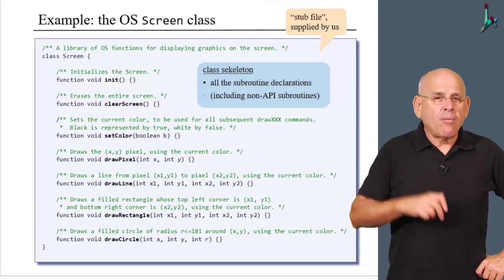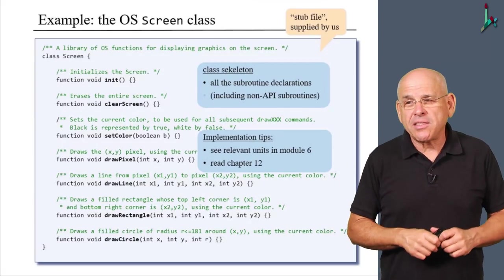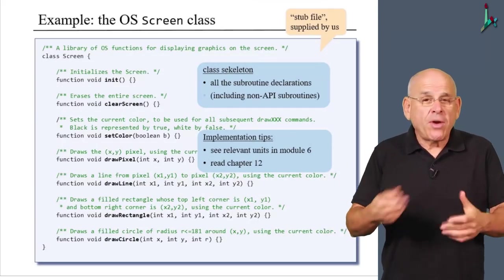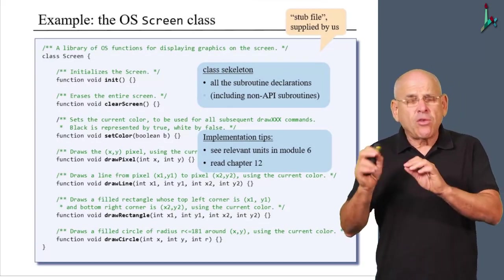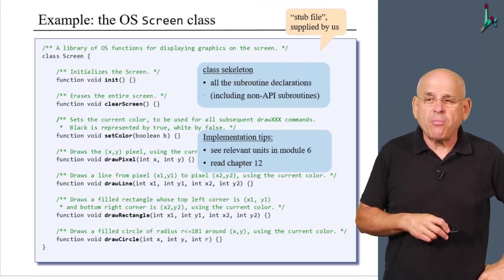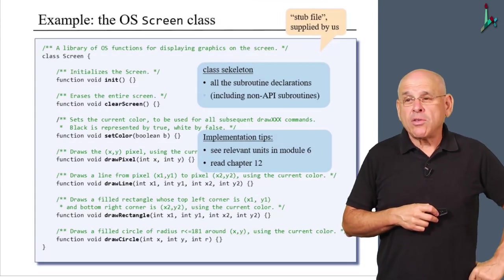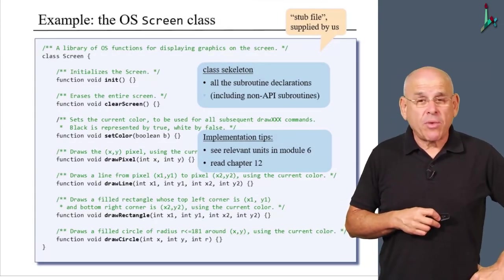Now, how should you go about implementing this class? Well, we discussed it in several units in this module. So you just go back, you reread, if necessary, the relevant modules in the relevant units in module six. If you want, you can consult chapter 12 in the book, and then you just go on and implement every one of these methods using the Jack language. So that's how you will develop the screen class.